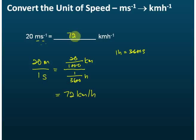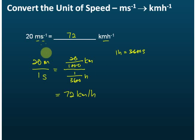So 20 meters per second is equal to 72 kilometers per hour. This is how we do the conversions — if you see the unit is something per something, write it into fraction form, and then only start to do the conversions.